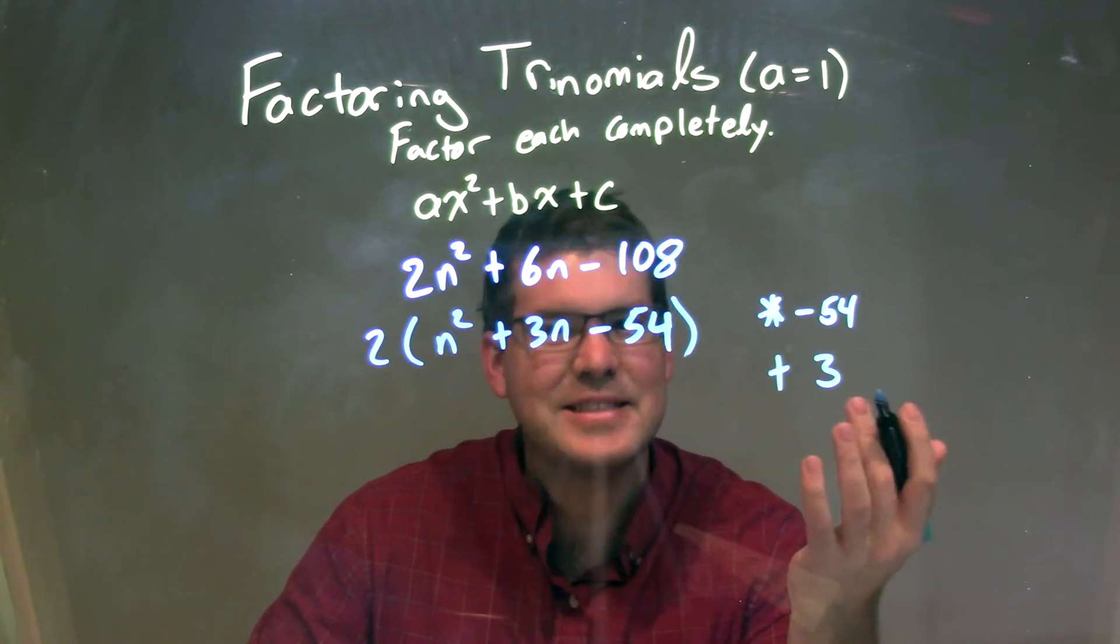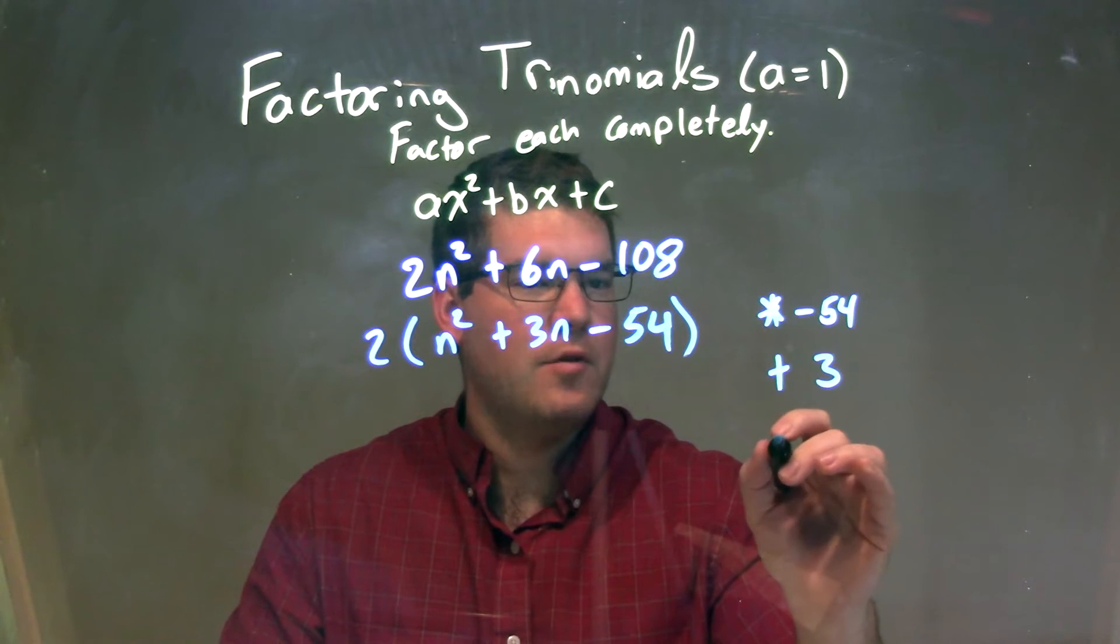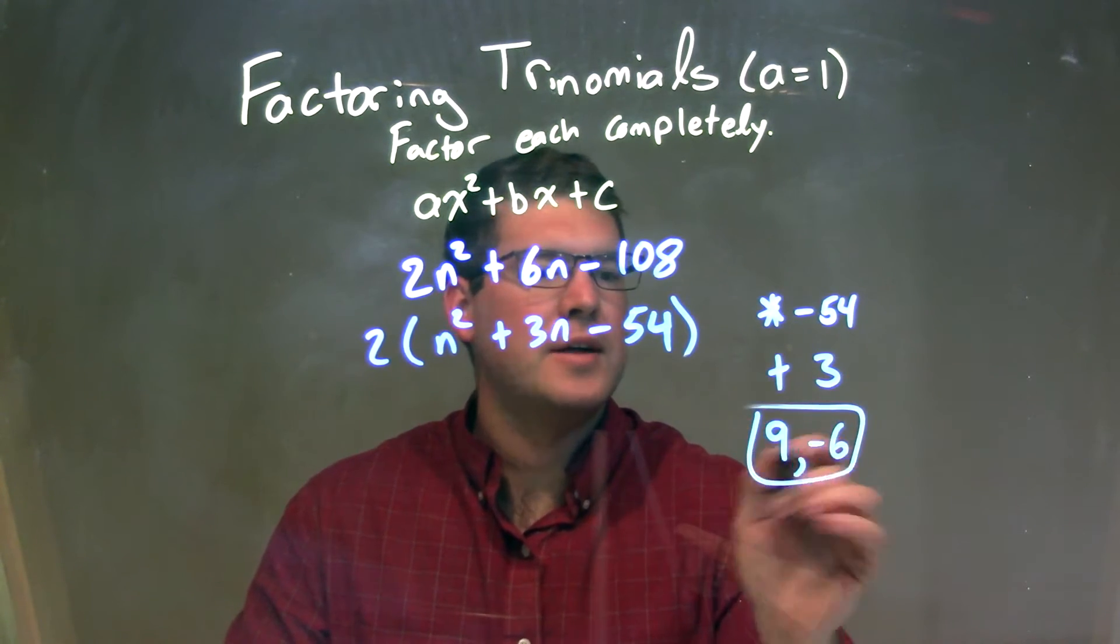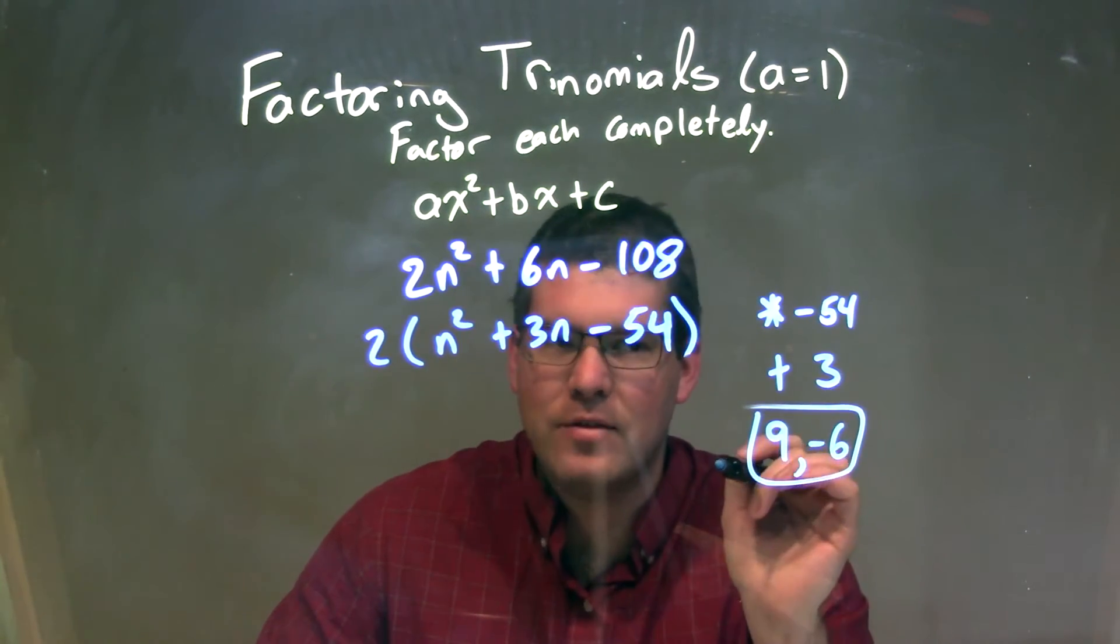Well, 54, I'm thinking 6 and 9, and one's going to be negative, but we want a positive 3. So if we have a positive 9 and a negative 6, 9 times negative 6 is a negative 54, but 9 plus negative 6 is a positive 3.